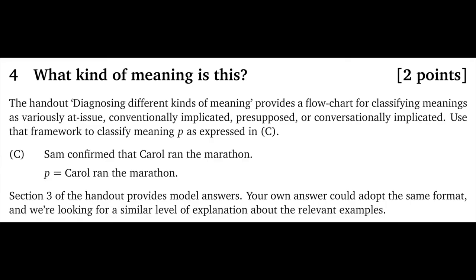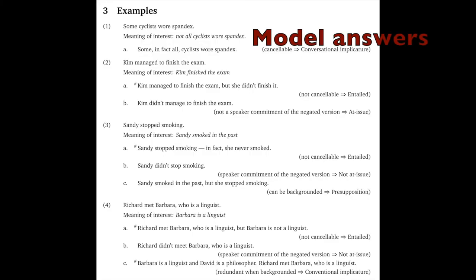In more detail, the handout 'Diagnosing Different Kinds of Meanings' provides a flow chart for classifying meanings as variously at-issue, conventionally implicated, presupposed, or conversationally implicated. Use that framework to classify meaning P as expressed in sentence C. Sentence C is: 'Sam confirmed that Carol ran the marathon', and the target meaning P is that Carol ran the marathon. As usual with these questions, we're not evaluating your judgments — this is a tricky case, and people might differ in their intuitions, so our evaluation is entirely about how you reason in terms of the tests and the flow chart.